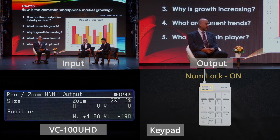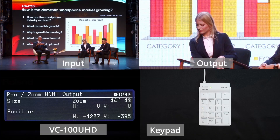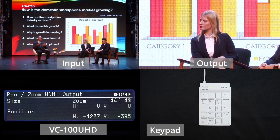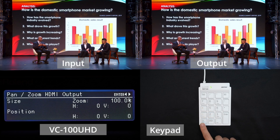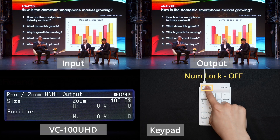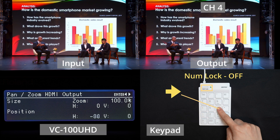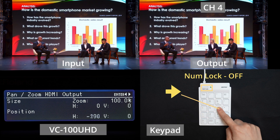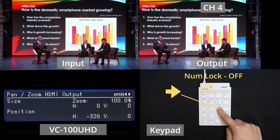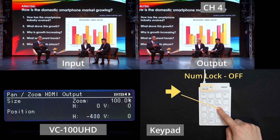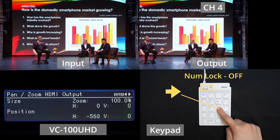All additional channels can be set in the same way. Press 4 to select channel 4, turn off number lock, then press the plus button to zoom up. Use the arrow keys to adjust the position.